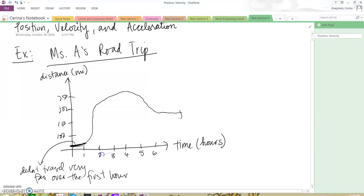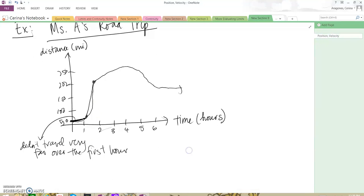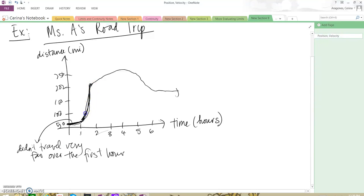Then from t equals one to t equals two, I traveled a long distance over one hour. I traveled from 15 miles to 200 miles. So for the second part of the graph, I traveled about 200 miles over one hour.